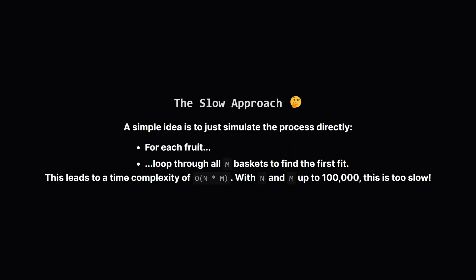The most direct way to code this is to do exactly what we just did manually: for every single fruit, loop through the entire list of baskets from start to finish. This works but it can be really slow. If we have n fruits and m baskets, this would be an O(n × m) algorithm. If both n and m are large, this will definitely time out. We need a smarter way.